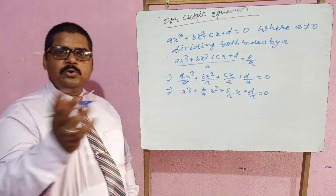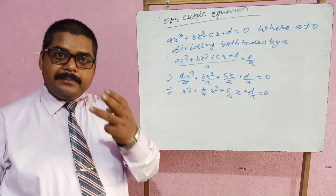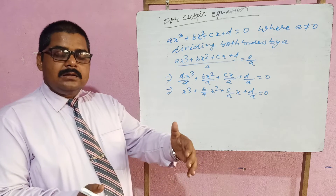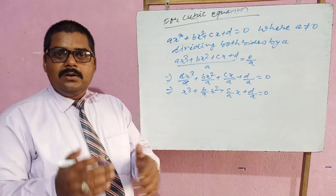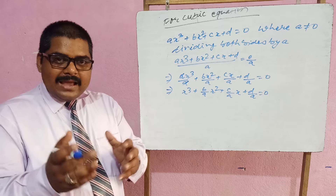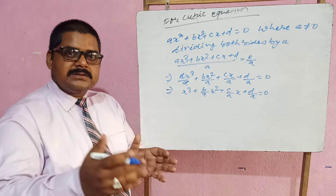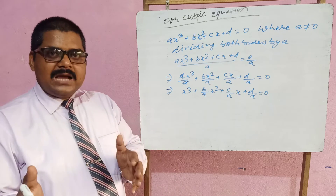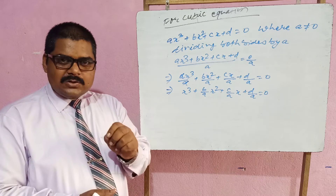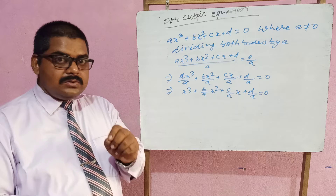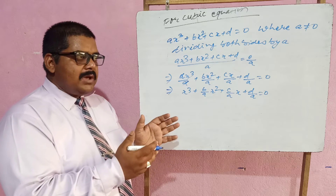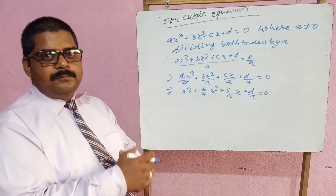A cubic polynomial has three zeros: alpha, beta, and gamma. You need to know the relations: alpha + beta + gamma, alpha·beta + beta·gamma + gamma·alpha, and alpha·beta·gamma. We need to rearrange the equation in terms of these three expressions.